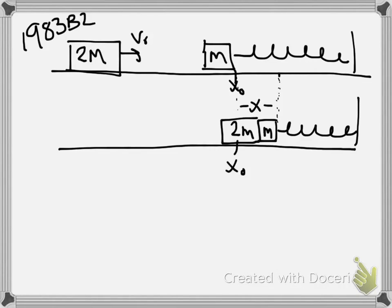Alright, so this is the solution for the problem labeled 1983B2. Right off the bat, hopefully you can see that this is probably going to be some kind of collision problem, but also with a spring. So we've got some momentum issues here, and possibly energy, possibly simple harmonic motion. So we've got a lot of work cut out for us on this one.